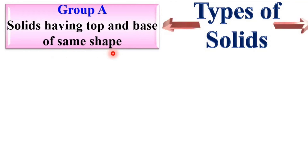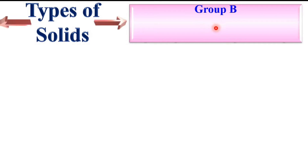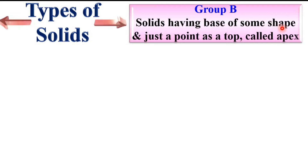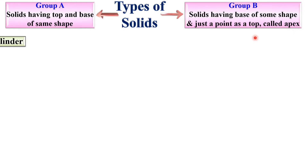Starting with the types of solids, basically there are two types. The first is Group A, where solids have a top and base of the same shape — top and bottom are the same shape. The other is Group B, where solids have a base of some shape but just a single point as the top, and that point is known as the apex point.